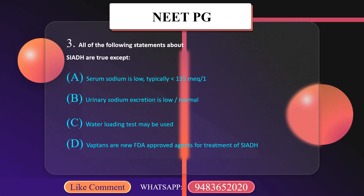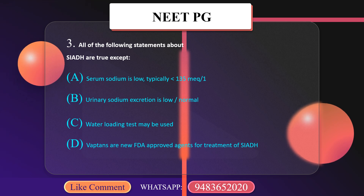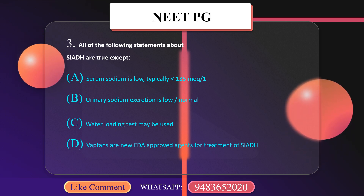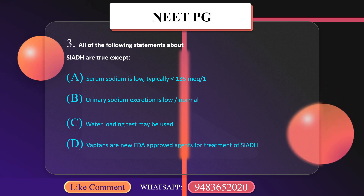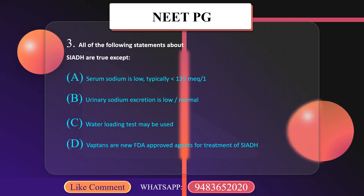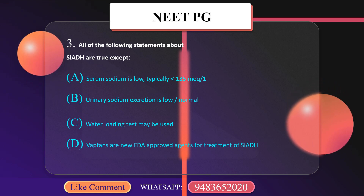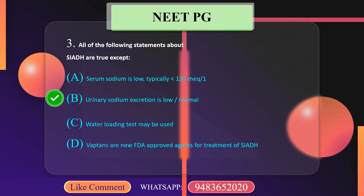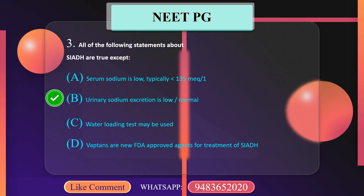All of the following statements about SIADH are true except: A. Serum sodium is low, typically less than 135 mEq/L. B. Urinary sodium excretion is low or normal. C. Water loading test may be used. D. Vaptans are new FDA-approved agents for treatment of SIADH. The correct option is: urinary sodium excretion is low or normal.